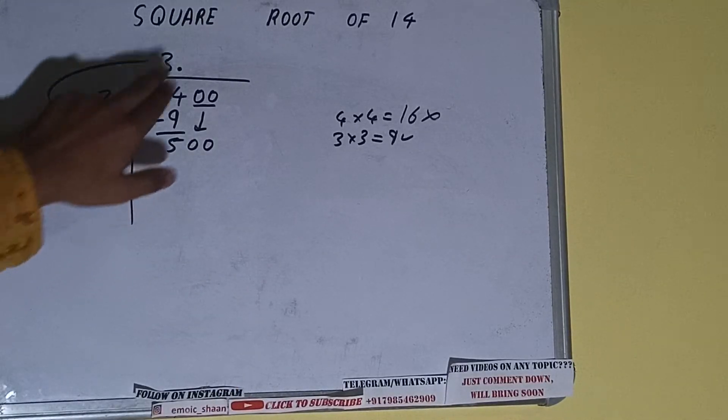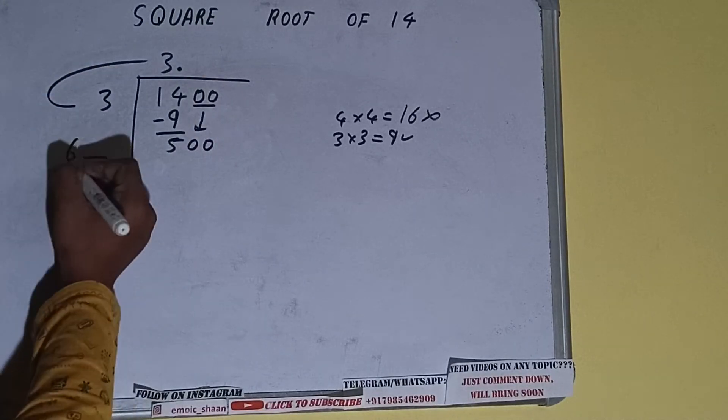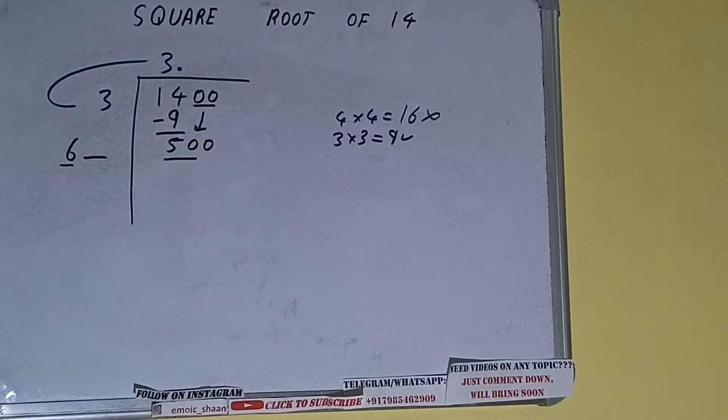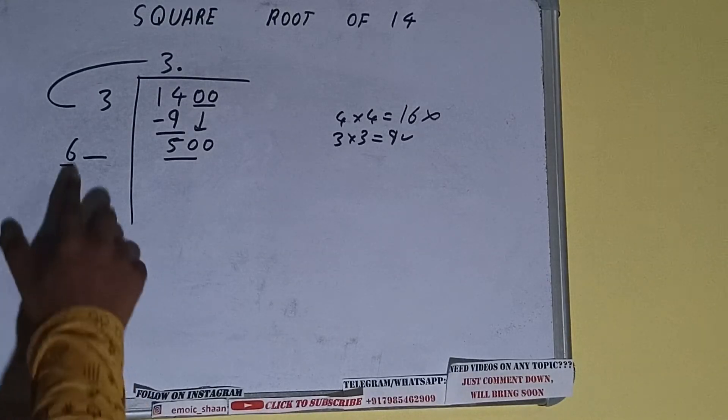Now whatever number we write here, we have to write here also. So we can compare this 6 with this 50. So 6 times 8 is 48, right? So we can try 8 times.